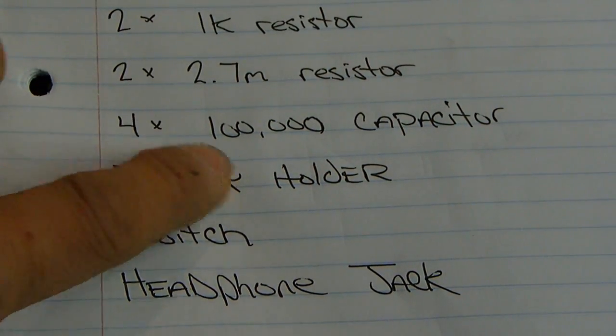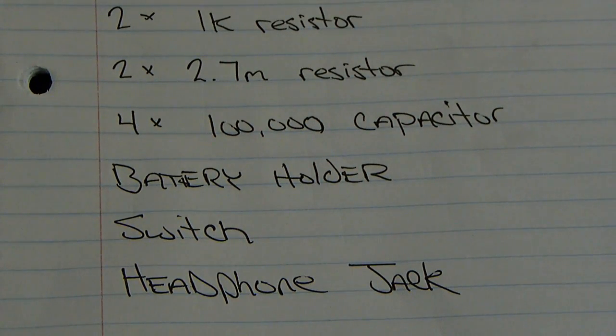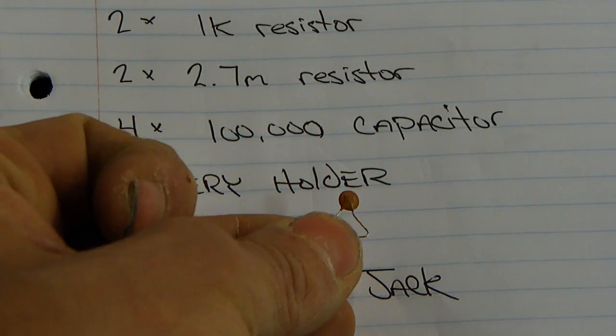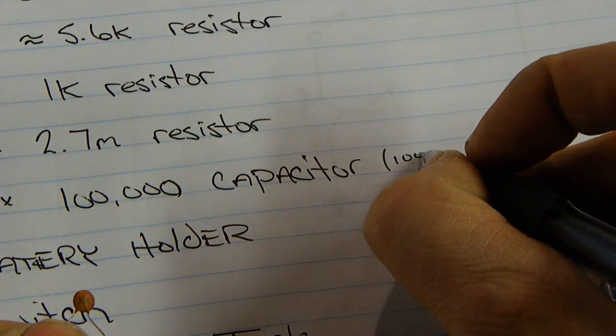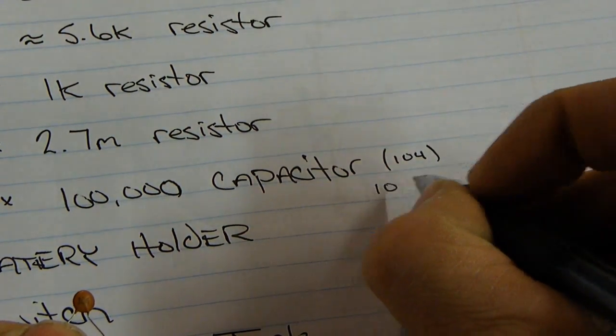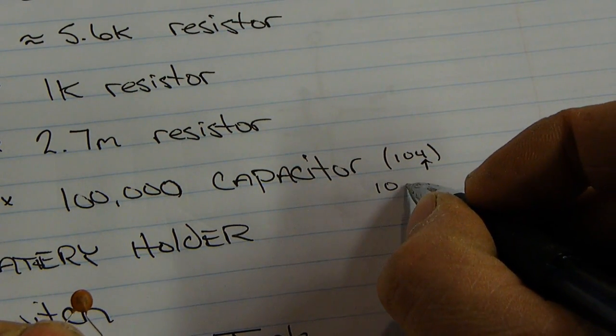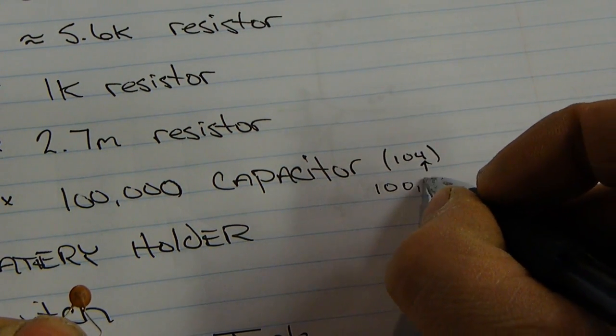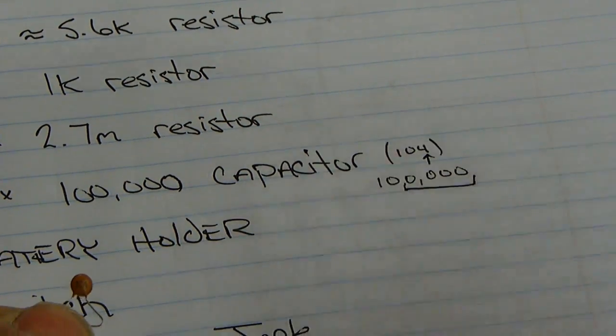Moving on, four times 100,000 picofarad capacitors. That's a 104. You might not be able to see it. It says 104. And that's the code for 100,000 picofarads. It's actually a 10 with 4, the third number being how many zeros to add after 10. So, 1, 2, 3, 4. Thus, 104.